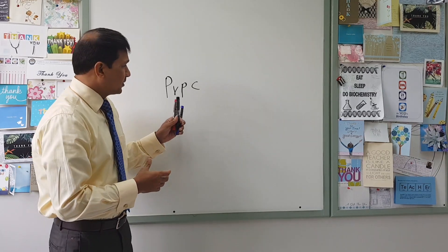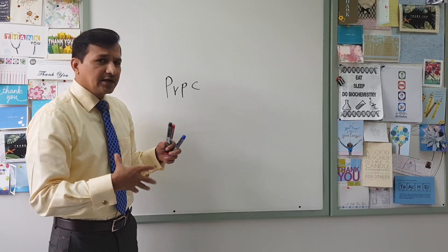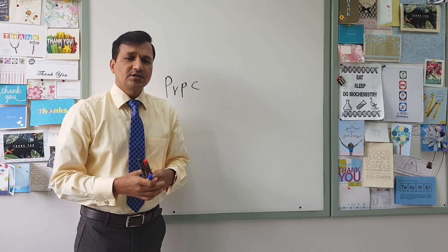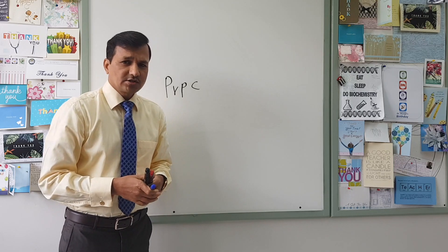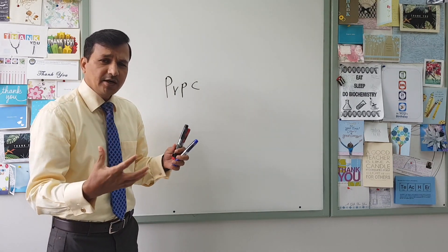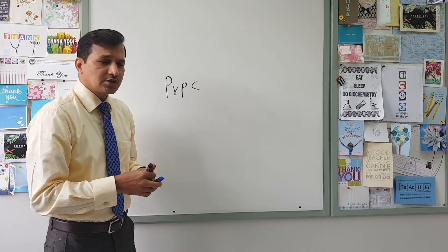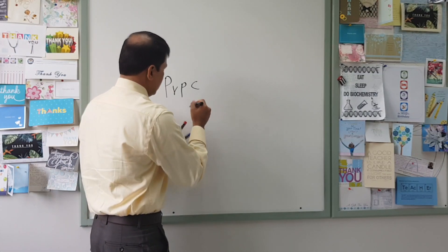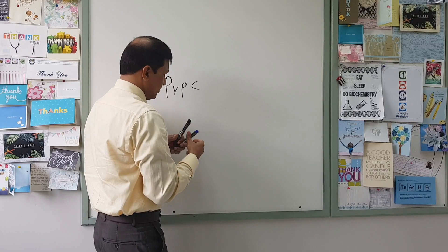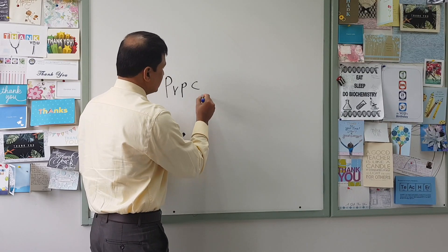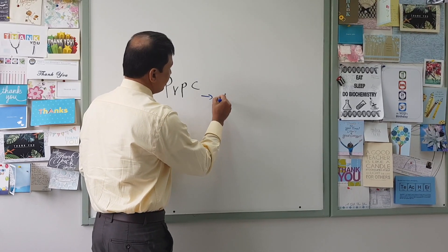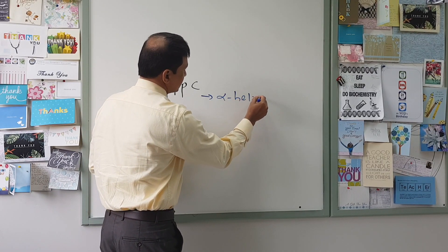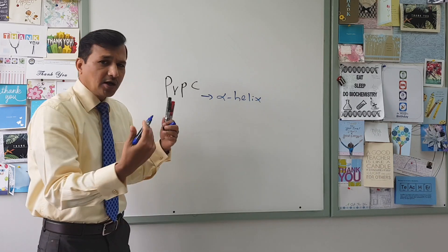This PrPC has a correct, well-organized tertiary structure. It is abundantly composed of alpha helix — the PrPC is composed of alpha helix structure predominantly.